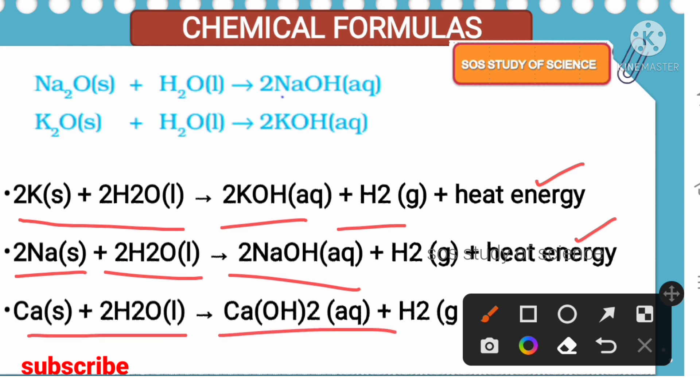Calcium reacts with water to form calcium hydroxide and hydrogen gas is released. Compared to sodium and potassium, calcium is less violent and the amount of heat evolved is less. When calcium reacts with water, the calcium starts floating because bubbles of hydrogen gas are released and stick to the metal surface.